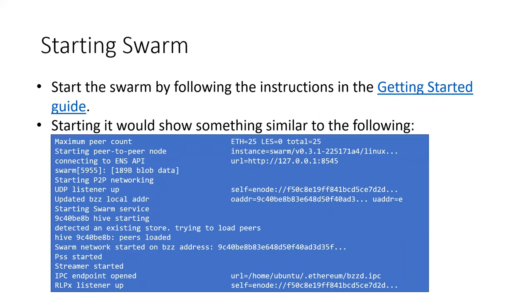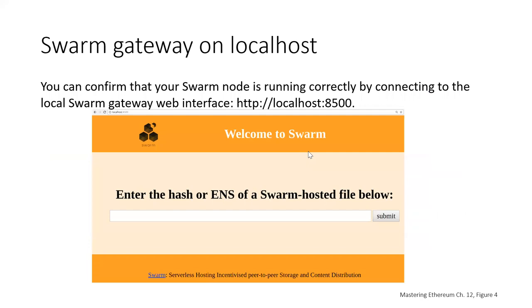First, you want to tell Swarm how to connect to an instance of GoETH so it has access to the JSON RPC API provided by the Ethereum node. Starting it will show you output like this. You should confirm your Swarm node is running correctly by connecting to the local Swarm gateway at localhost 8500, where you'll see a screen saying 'Welcome to Swarm.'